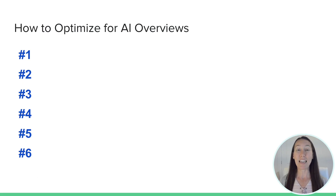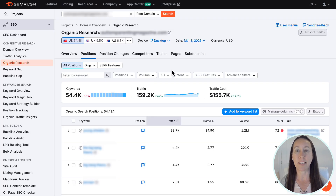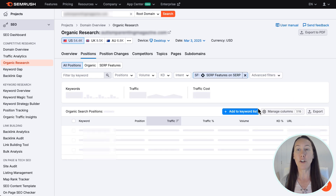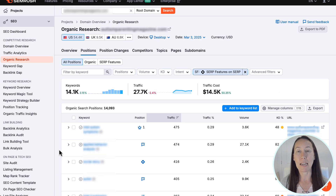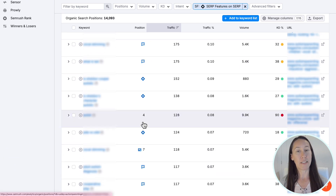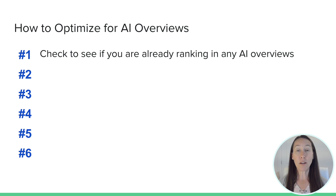The first thing you want to do is check to see if you are already ranking in any AI overviews — you may not even realize it yet. Head over to SEMrush Organic Research, look at your Position Tracker, select the SERP features, and look for AI overview. If you are ranking there, go back and look at how your page is formatted, the type of content it has, and how it's laid out. You'll also want to look at competitors' websites and which of their keywords are appearing in AI overviews.